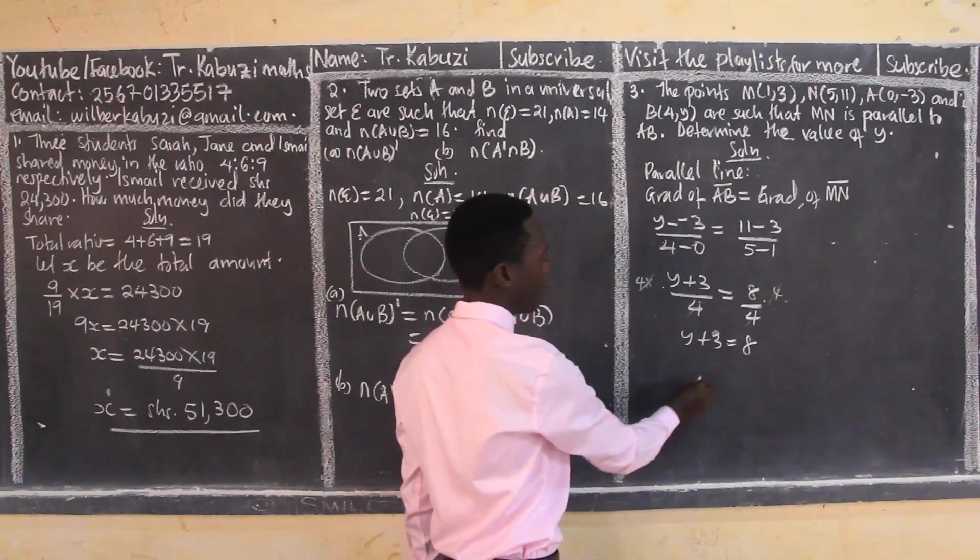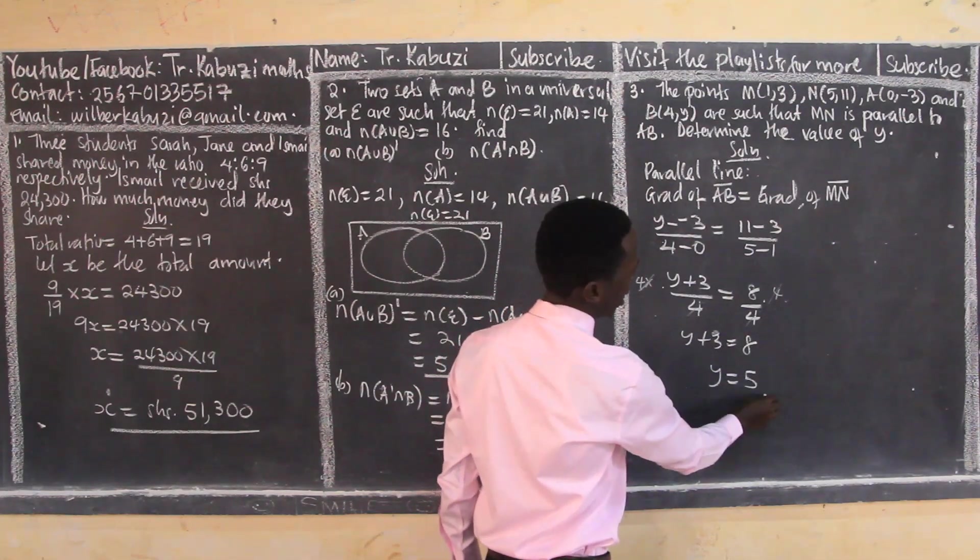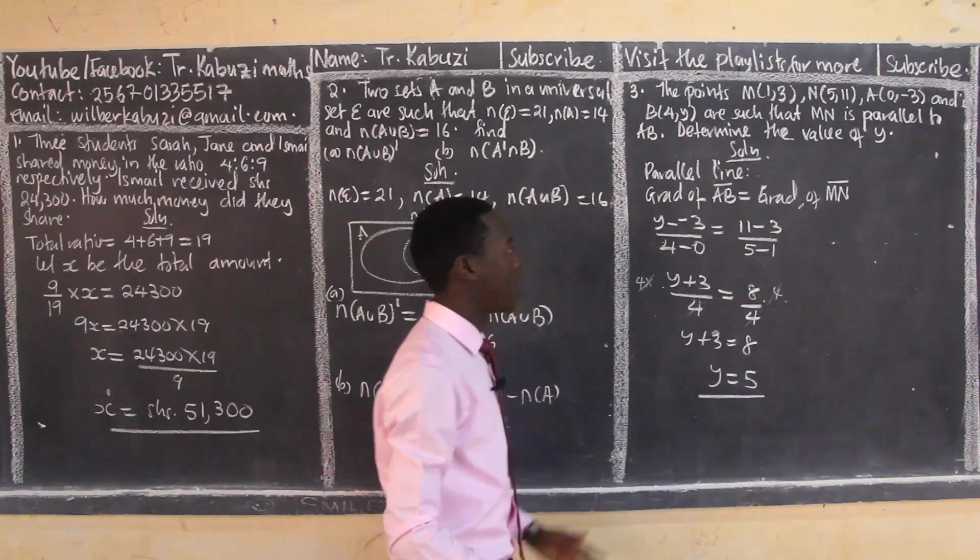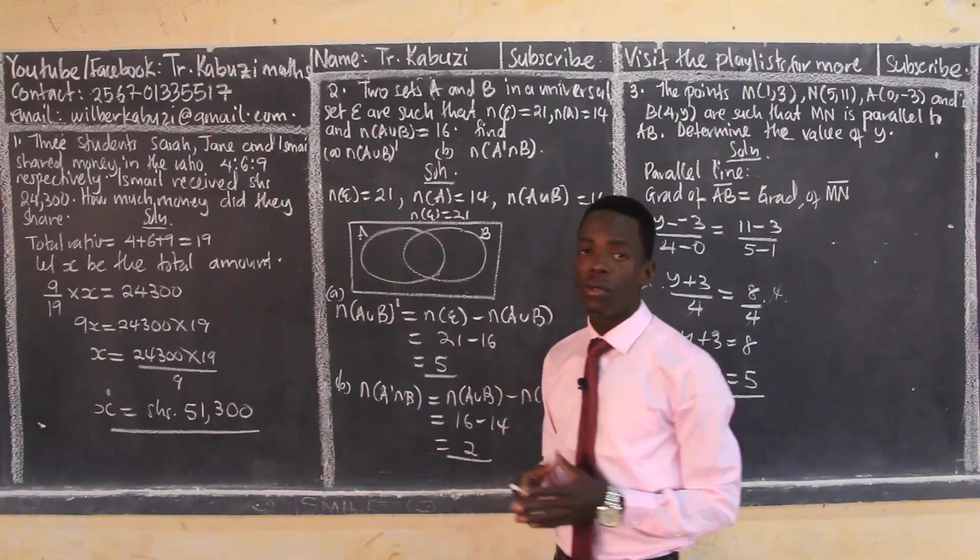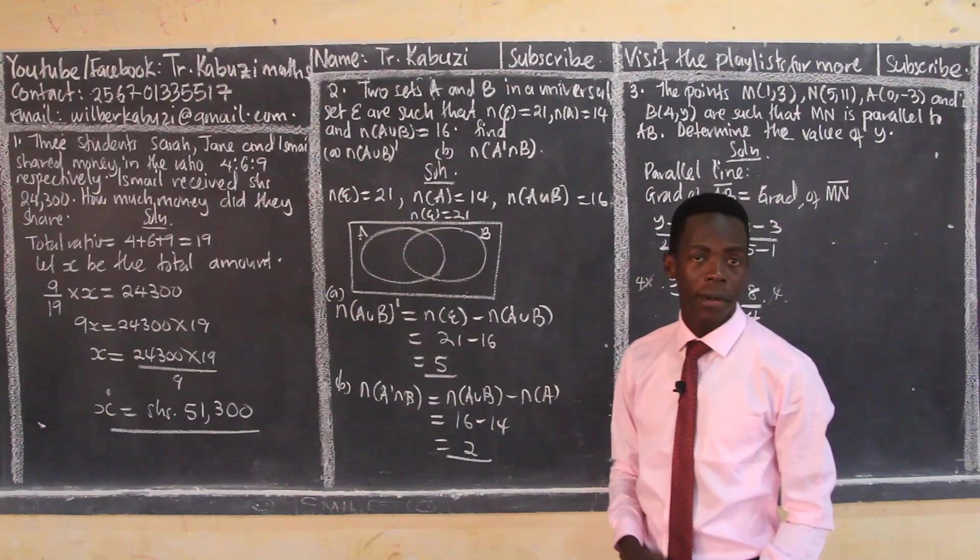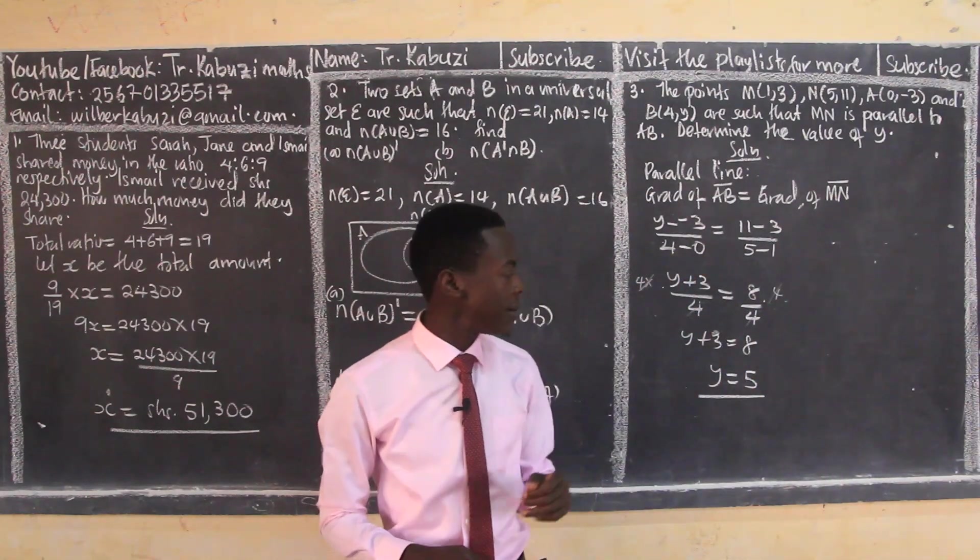Then I'll have y plus 3 equals 8. From there you can see my y will be equal to 5. So that's how I can easily obtain the value of y. That's number 1, 2, and 3. We shall now proceed to number 4. See you there. Please don't forget to subscribe to the channel.